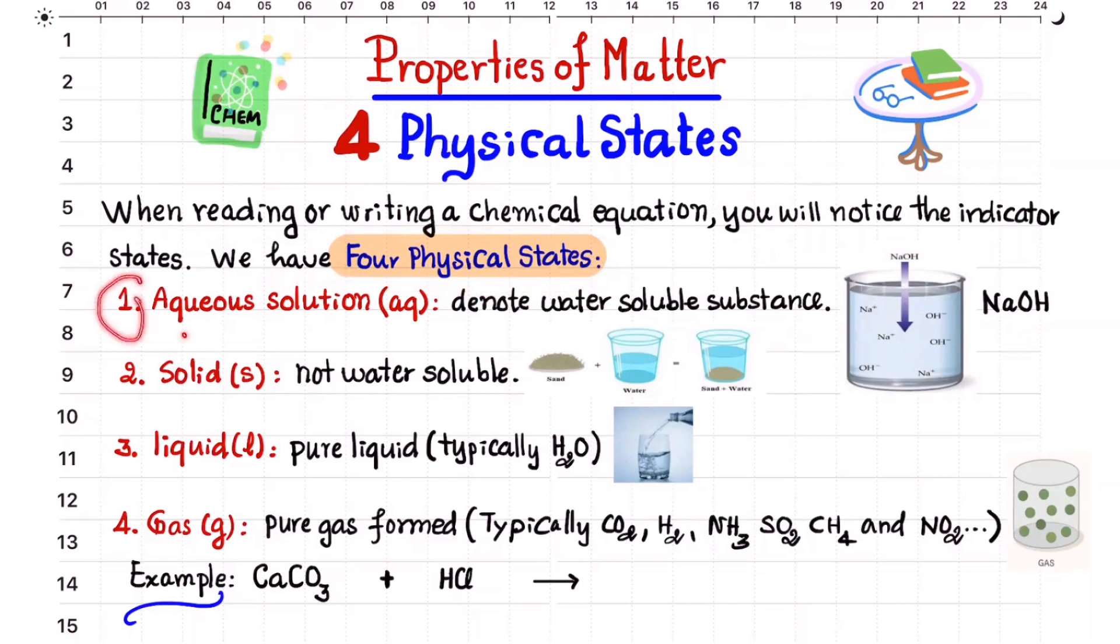Number one, aqueous solution means that the water soluble substance. For example, I have sodium hydroxide. It is a solid. I can put it in the water and then sodium hydroxide decomposes into sodium ion and hydroxide ion. This is what we call a solution.